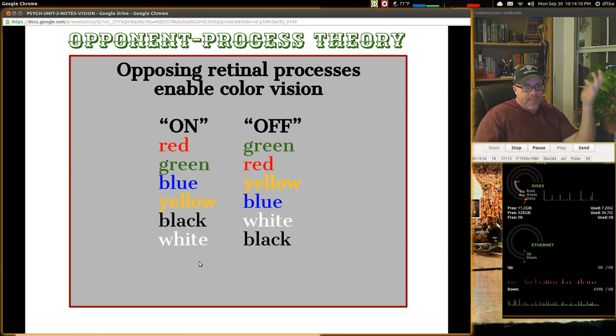Here's another way of looking at it. Opposing retinal processes enable color vision. On, off. Red, green, blue. Yellow, black, white. Red, green, yellow. Blue, white, black. So then on and off. If you pair them together, and that's what they're saying here, opponent process theory was developed, is that there are some combinations we never see. So if you've got red and green, it shuts that off.